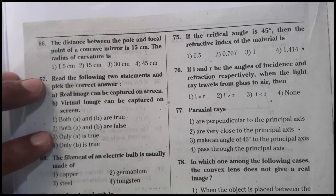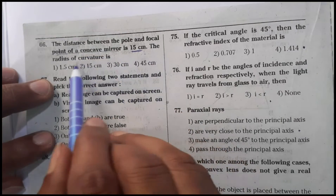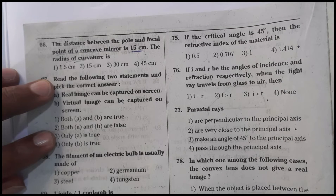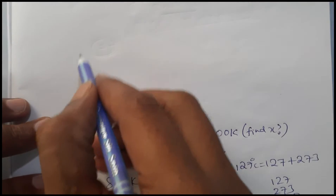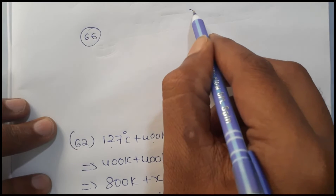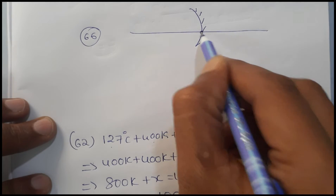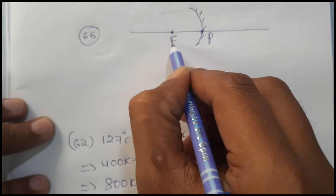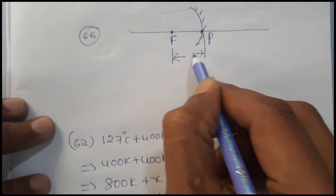Question 66: The distance between the pole and focal point of a concave mirror is 12 centimeters — what is the radius of curvature? For a concave mirror, the pole is denoted by P and the focal point by F. The distance from focal point to pole is the focal length.